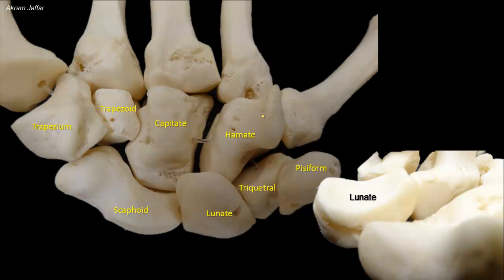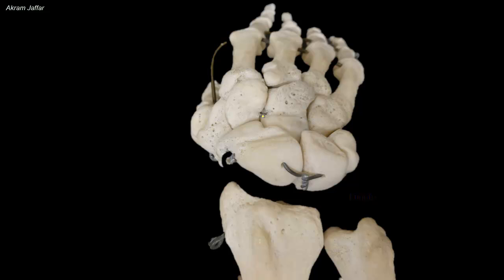You can see here the displaced lunate, and note the shape of the bone — it looks like a moon. The lunate dislocates anteriorly because it is broader anteriorly than posteriorly. The lunate bone is too deep to be felt on the flexor surface; however, it is easily palpable midway between the radial and ulnar styloid processes on the extensor surface.